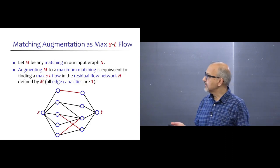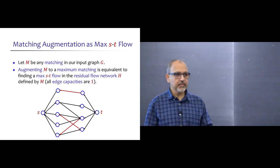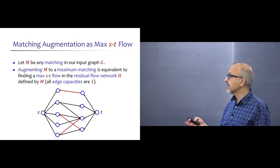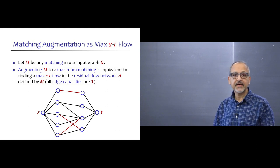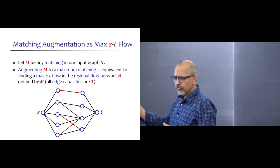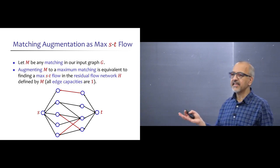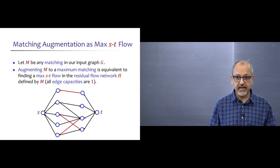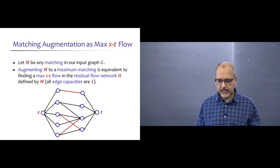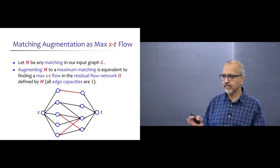The starting point is the textbook connection between bipartite matching and max flow. Suppose you have a current matching M in input graph G; augmenting M to a maximum matching is equivalent to finding maximum flow in the residual flow network defined by M. The residual flow network is a directed bipartite graph where all edges go from left to right, except matching edges which are directed backwards. All edge capacities are one, and every vertex has either in-degree one or out-degree one — that's the special structure of this network.